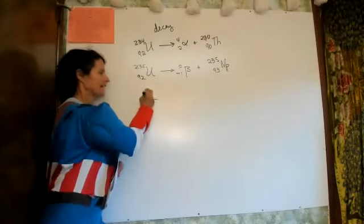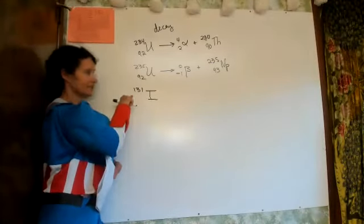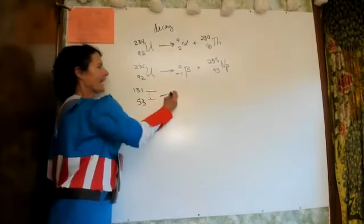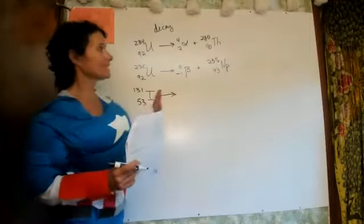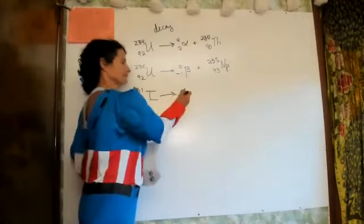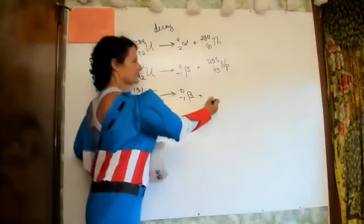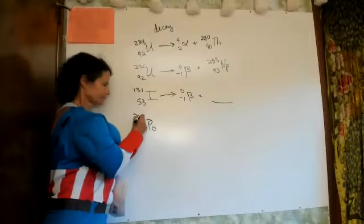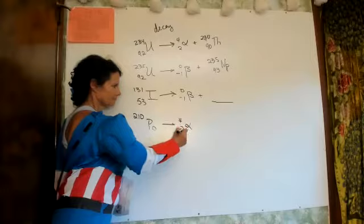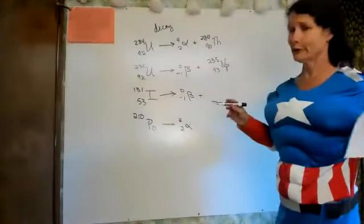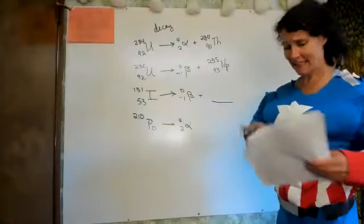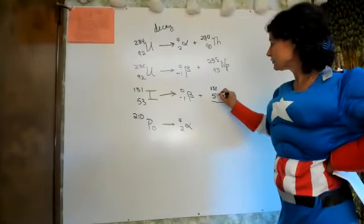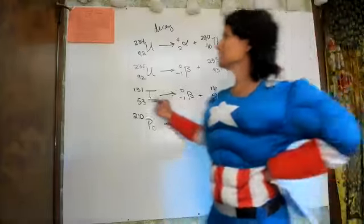Iodine-131: iodine is number 53 on the periodic table. The alpha and beta particles are always on the product side — in this case, beta decay. In beta decay, the mass stays 131 and my atomic number moves up one to become number 54, which is xenon.